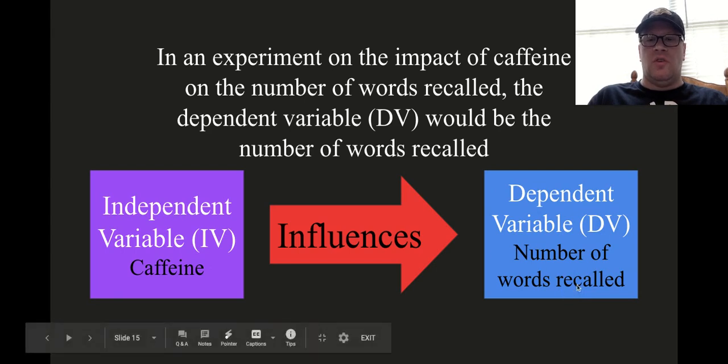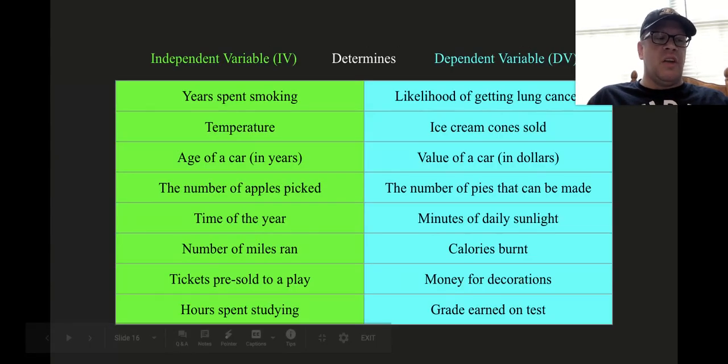So again, this is going to be your data. The term dependent variable comes from the assumption that the responses of the participants in an experiment will be dependent upon the independent variable that has been manipulated in the experiment.